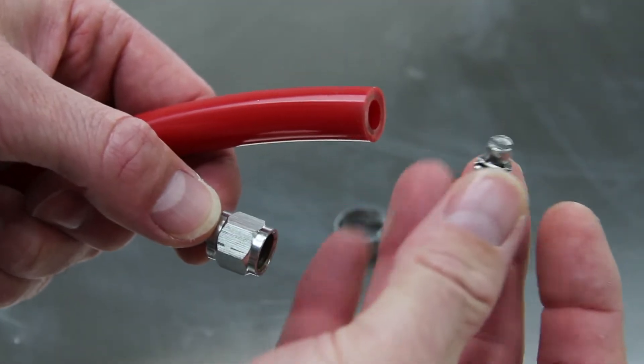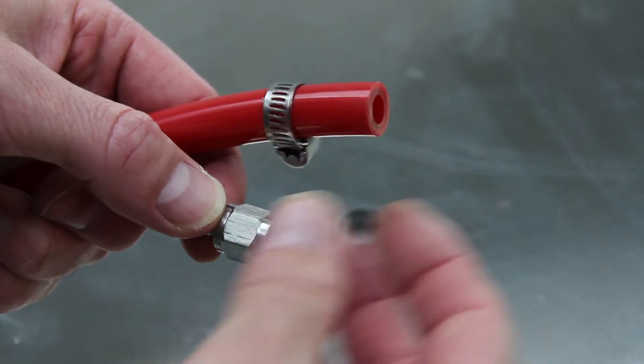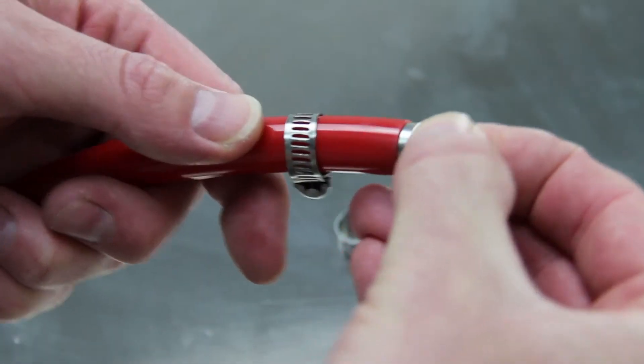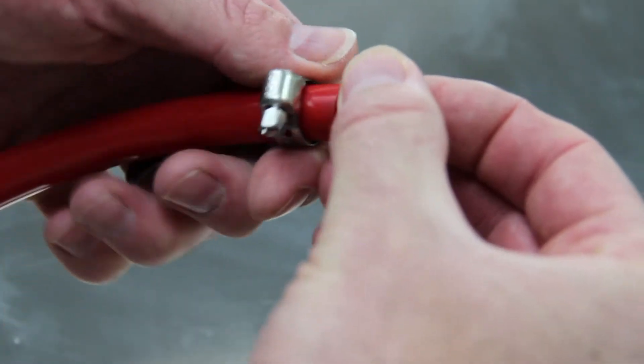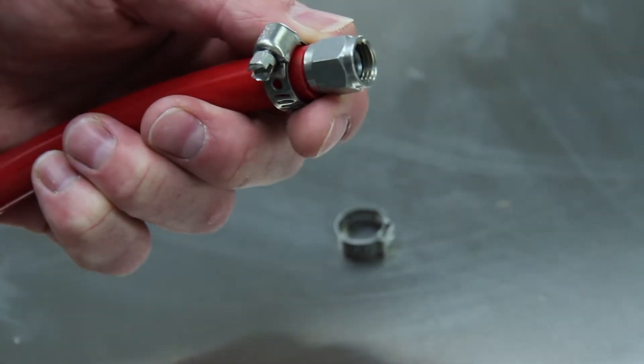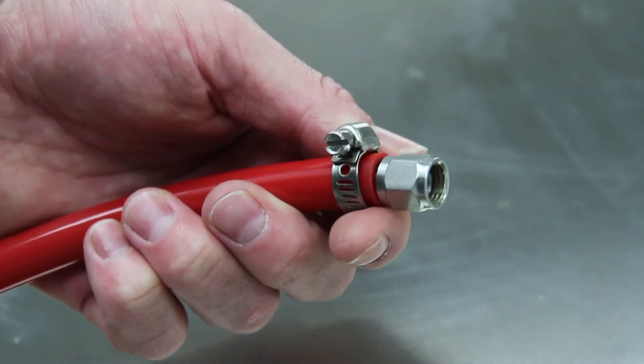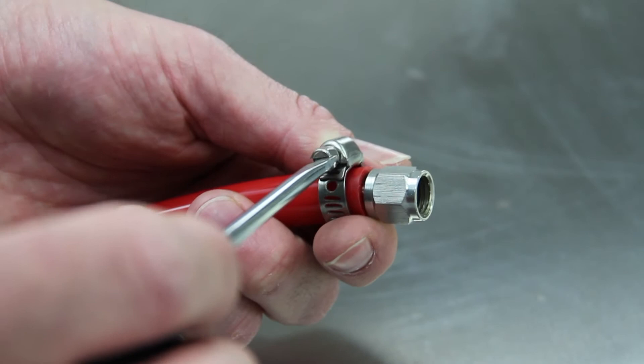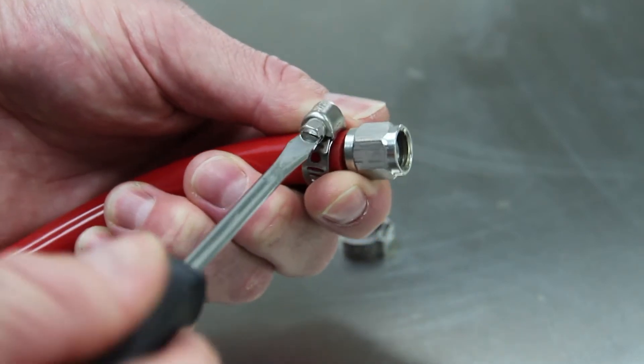A worm clamp will attach a barbed fitting to your hose using a flathead screwdriver. These clamps are great if you're ever going to need to add or remove the barbed fitting from the hose. Simply turn clockwise to tighten or counterclockwise to loosen.